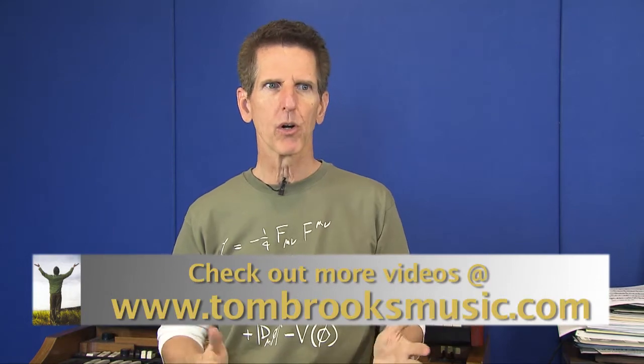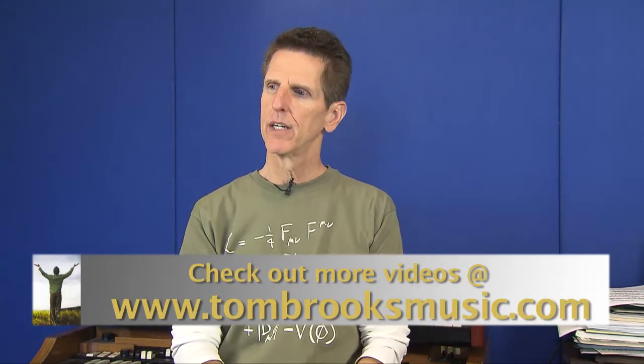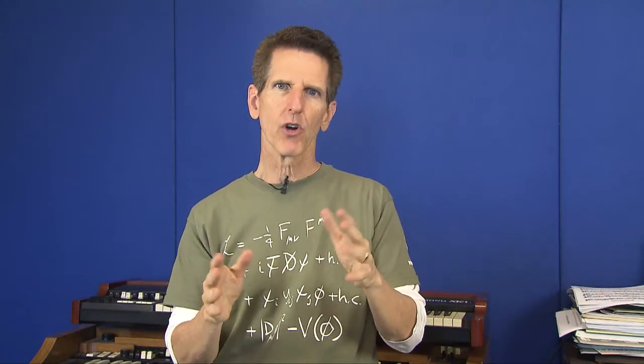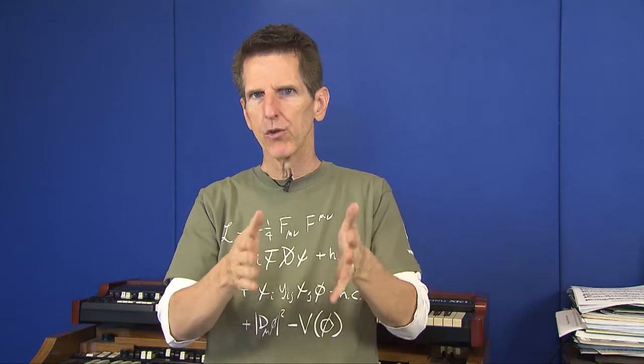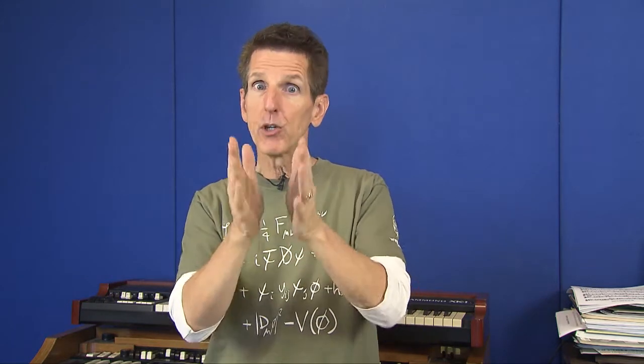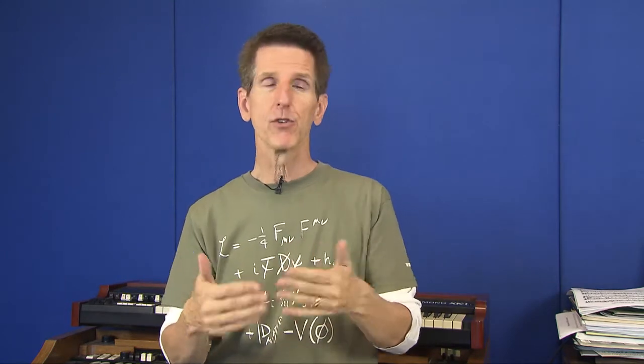A typical pop rock modern worship song might have a form like this. It might start with the intro, then verse 1 and chorus 1. Then there might be a re-intro, which is kind of like a restatement of the intro. Then you'd go into verse 2 and chorus 2 — maybe chorus 2 is a double. And if there's a bridge in the song, the bridge would probably happen right after chorus 2.